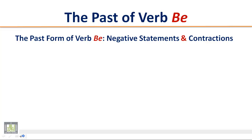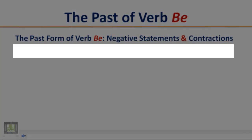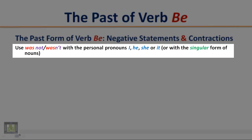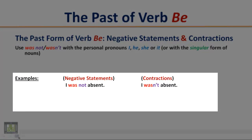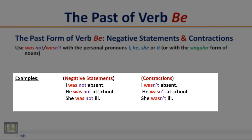The past form of verb B — negative statements and contractions. Use 'was not' or 'wasn't' with the personal pronouns I, he, she, or it, or with a singular form of nouns. Examples: I was not absent / I wasn't absent. He was not at school / He wasn't at school. She was not ill / She wasn't ill. It was not cold / It wasn't cold.